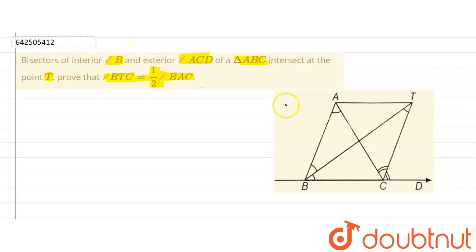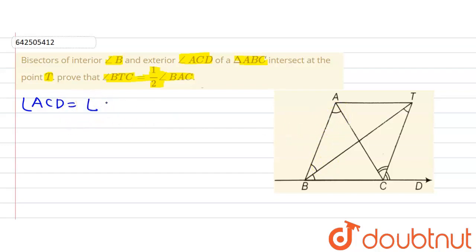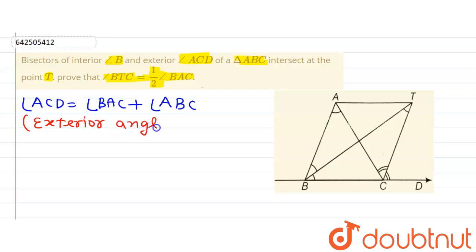Now let's proceed. If we observe triangle ABC, then angle ACD is the exterior angle. And we know that using the exterior angle property, we can write exterior angle ACD as the sum of the other two interior angles, that is angle BAC plus angle ABC. This is the exterior angle property of a triangle.